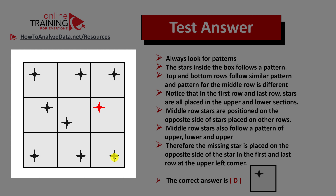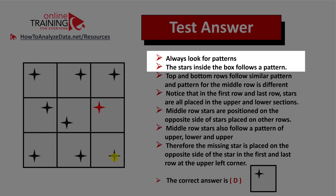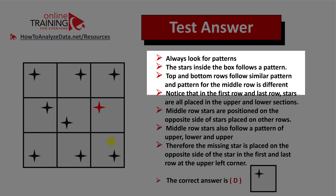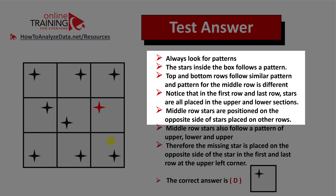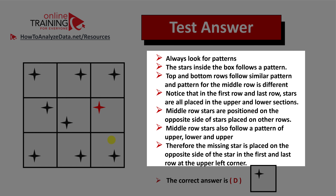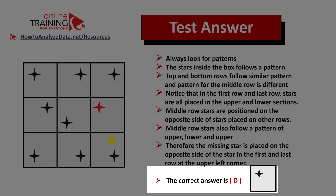This is why the missing star is placed on the opposite side of the stars in the top and bottom rows. To recap: always look for patterns. The top and bottom row stars follow similar patterns; the middle row pattern is very different. Middle row stars are positioned on the opposite side of other rows and follow a pattern of upper, lower, then upper. The correct answer is choice D.